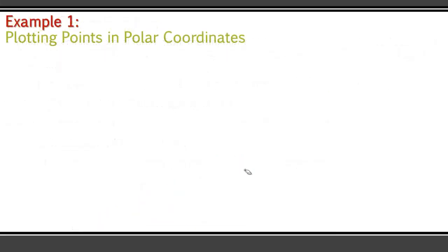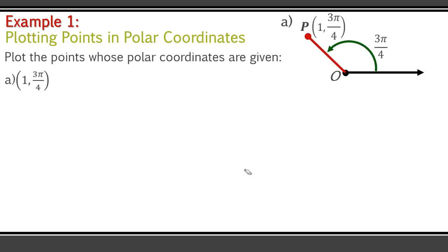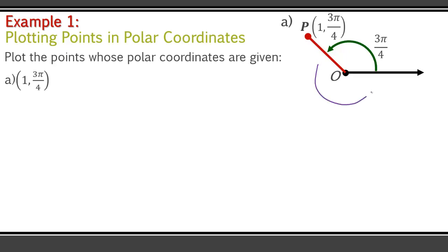Let's start with plotting points in polar coordinates. So if we are given (1, 3π/4), these are in polar coordinates. We have our polar axis. So 3π/4 gives us our angle measure, and that takes us over here. Then 1 — 1 unit is the length from O to P. What might be useful is to imagine this as kind of like a unit circle, and then 3π/4 would be right there. As a reference to start off with, you might want to do that.